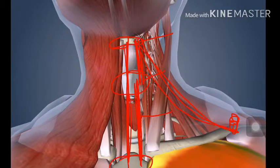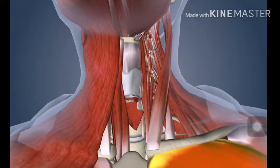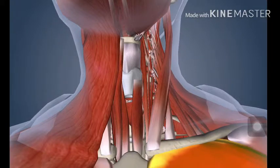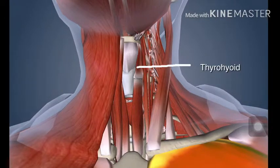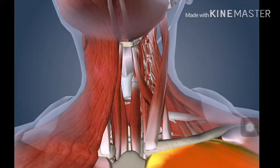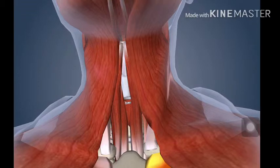It's simple. I'll show you how the muscles are located. This is the sternothyroid muscle, this is the thyrohyoid muscle, this is the omohyoid muscle, and this is the sternohyoid muscle. This is how the strap muscles are arranged.